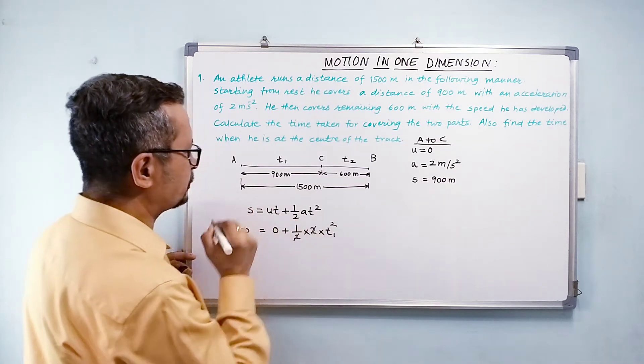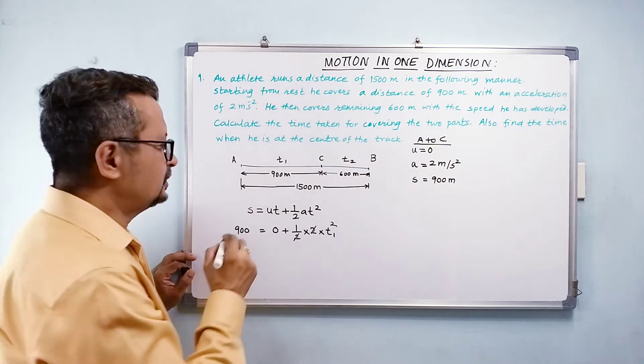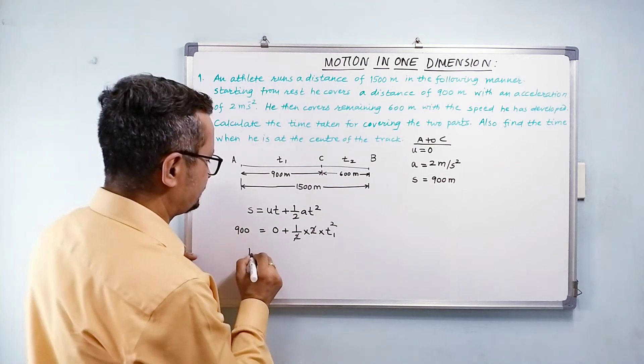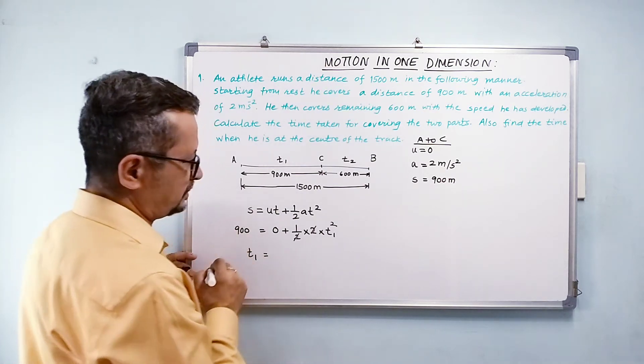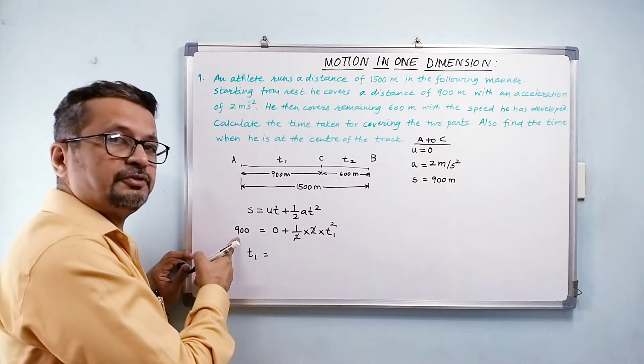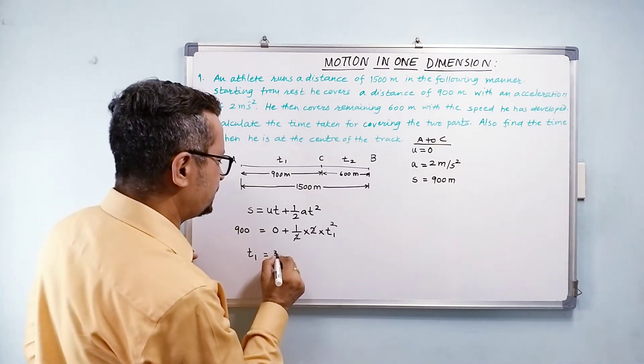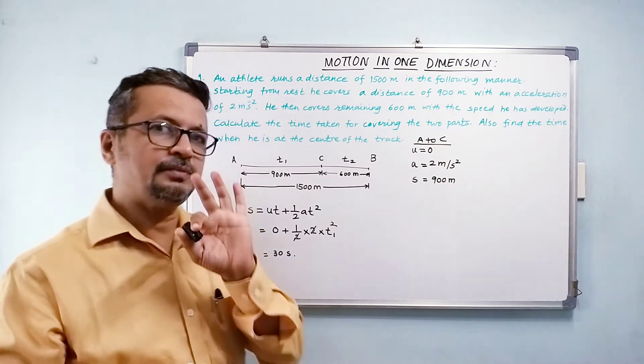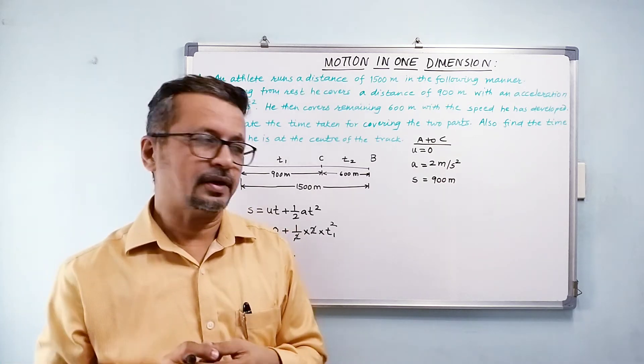So this is obviously going to be cancelled. So my t1 is going to be equal to square root of 900 which is 30 seconds. So one part is done.